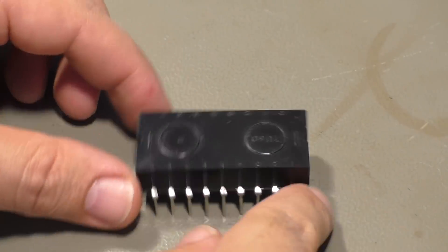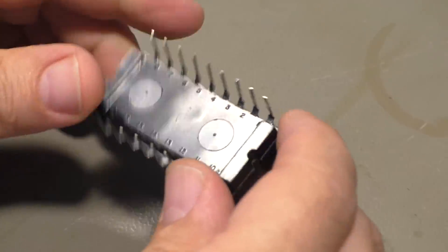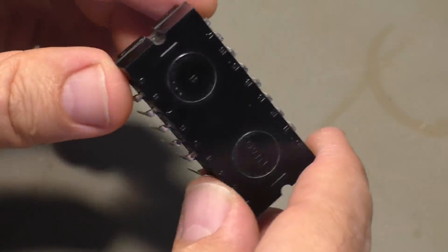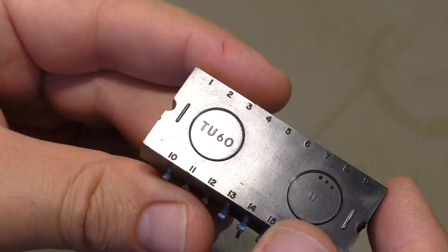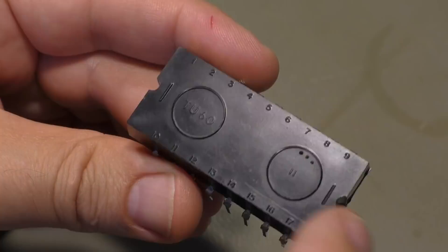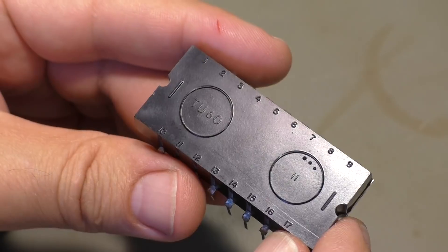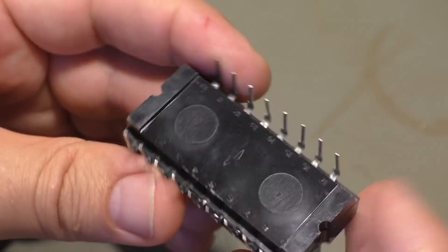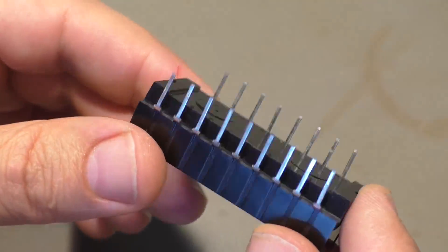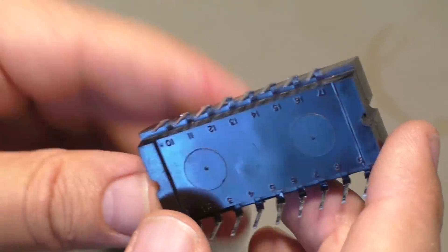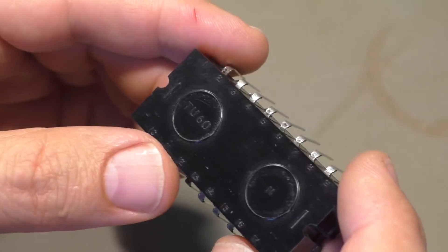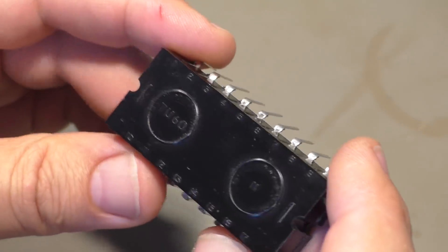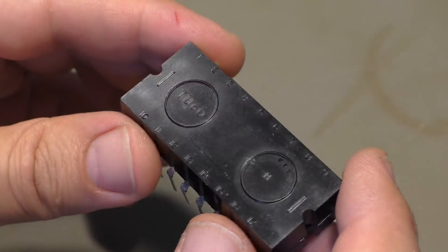In my last video I showed you this special strange looking integrated circuit, and I had no idea what it is except that it's the TU60 and it has 17 pins, looks like a big DIP package, but I had absolutely no information.